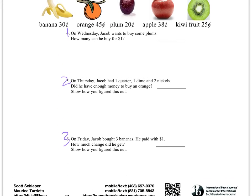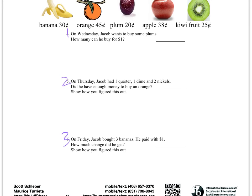Number three says on Friday, Jacob bought three bananas. He paid with one dollar. How much change did he get? Look at how much the bananas cost, multiply that by three, then subtract that total from the one dollar he paid with — that'll tell you how much change he got. Show how you figured this out and put your answer there. If you have any other questions, call Mr. Schlepper or myself, or text us. Good night. Good luck. Go Bears!